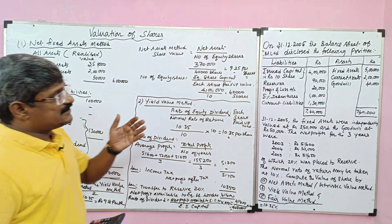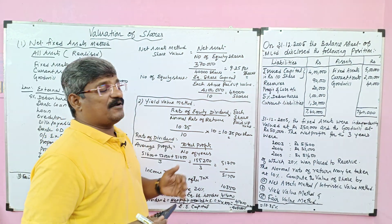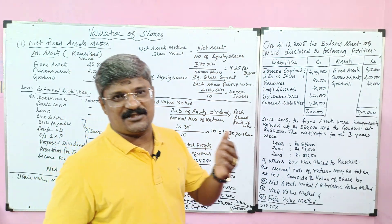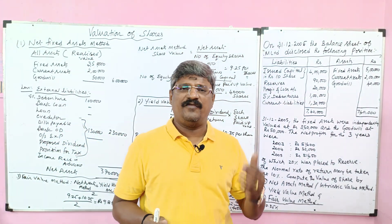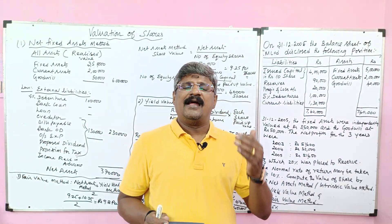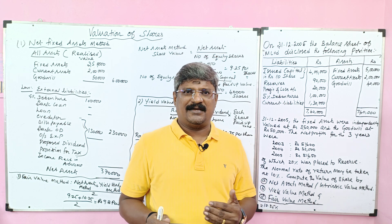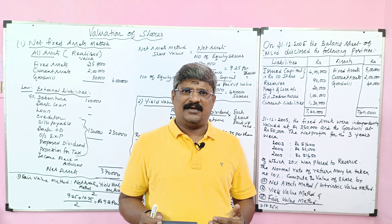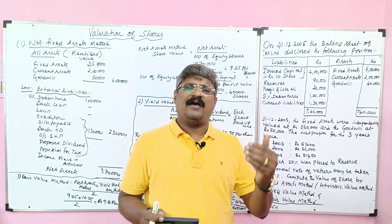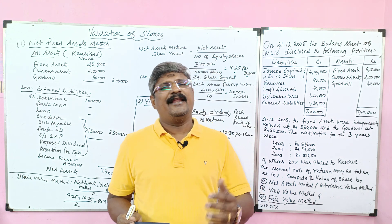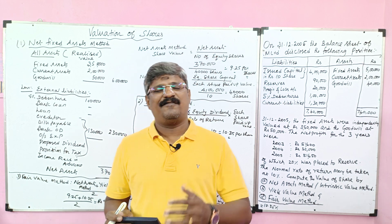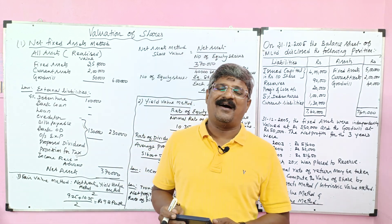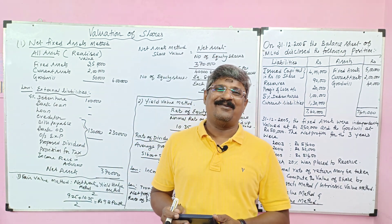In this question, preference share capital is not given, so we ascertained share value under all three methods: net asset method (9.25), yield value method (10.35), and fair value method (9.80). In the next class we will solve a different problem. Till then, bye and thank you.